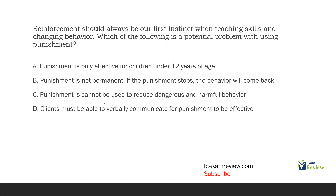Answer C: punishment cannot be used to reduce dangerous and harmful behavior. That's just not true — punishment can absolutely be used to reduce dangerous and harmful behavior. Answer D: clients must be able to verbally communicate for punishment to be effective. Again, not true. Most of the populations we work with sometimes include nonverbal clients, and punishment is effective on them like it is anyone else. The problem with punishment is it's not permanent. So our answer here is going to be B.